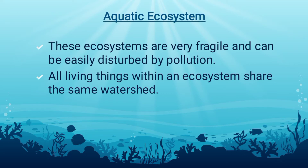All living things within an ecosystem share the same watershed. A watershed is an area of land over which water flows to reach a common body of water, such as a lake or pond. We all live in a watershed or drainage basin. Watersheds can be as large as the Mississippi River drainage or as small as a farm with a pond. Your watershed may be made up of mountains, farms, houses, businesses, or towns. You share your watershed with all the living things within the ecosystems.